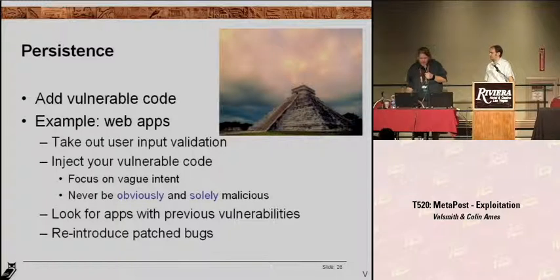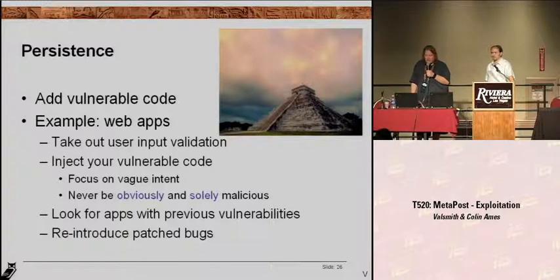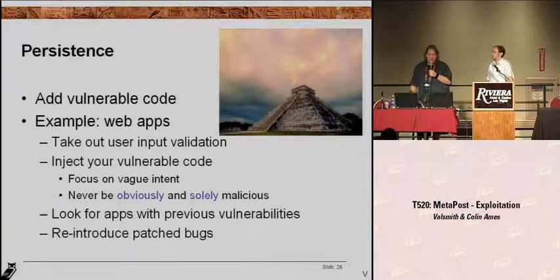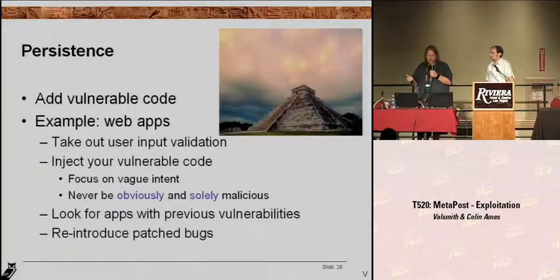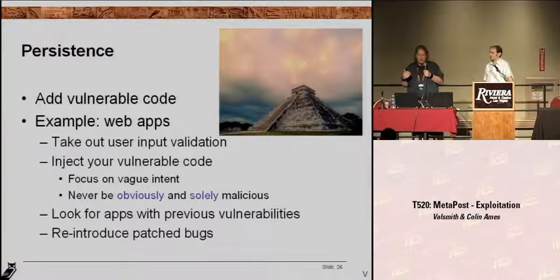Another really sneaky thing we like to do is to add vulnerable code to applications. This works really well in web apps because they're not compiled, so the code's sitting there for you to modify. Do things like take out user input validation — a lot of web applications have forms that people fill in. We'll go in there and take out the security checks so that you can exploit them later. It's unlikely that the coder's going to notice that. The focus here is on vague intent — never be solely malicious, never have your actions only have one outcome. Reintroduce patched bugs.